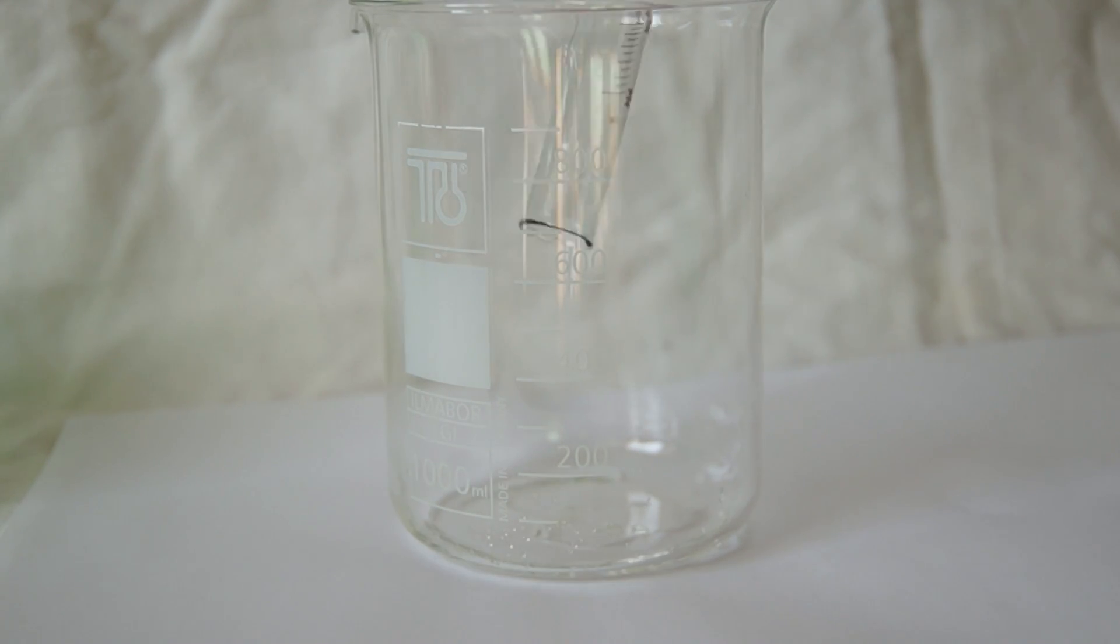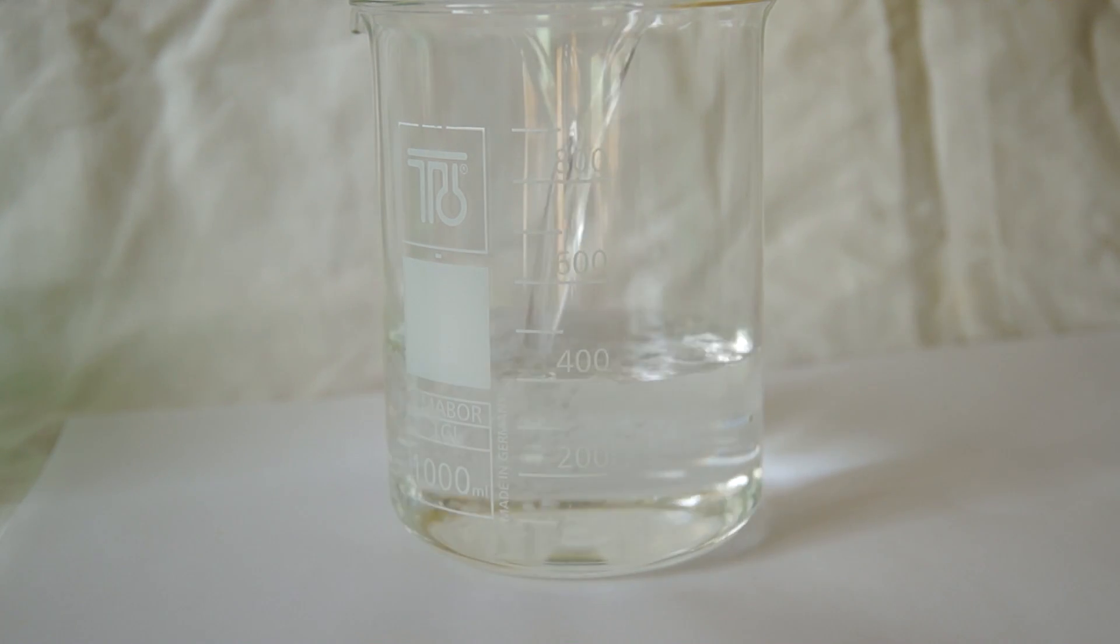Let's take another beaker and add there about 5 ml of 30% hydrogen peroxide and dilute the entire volume of the solution to half a liter. And here we have prepared both solutions.